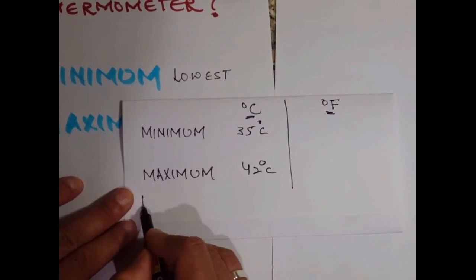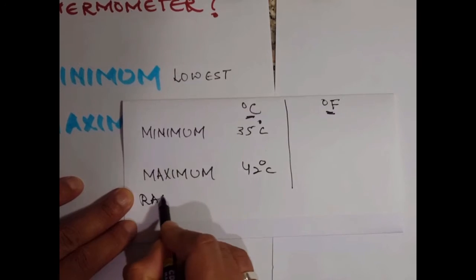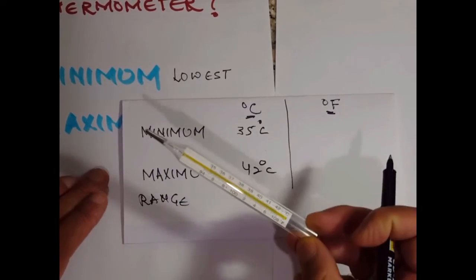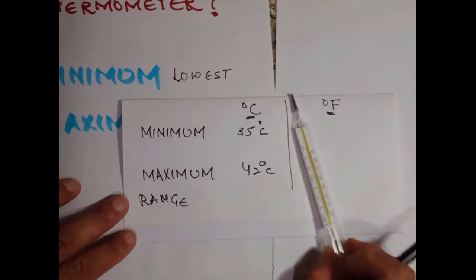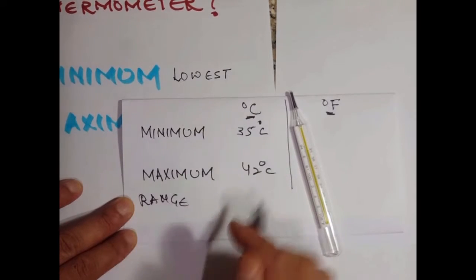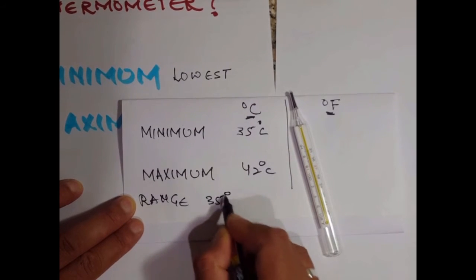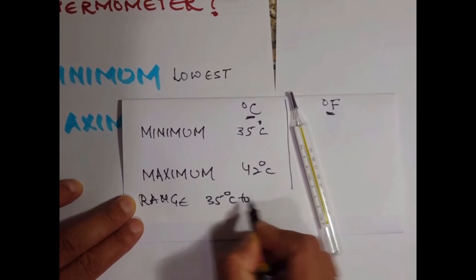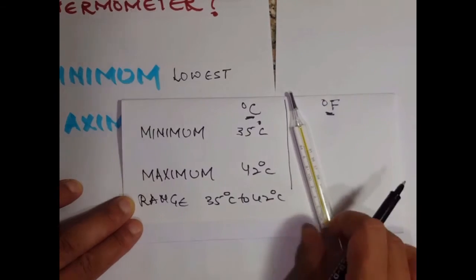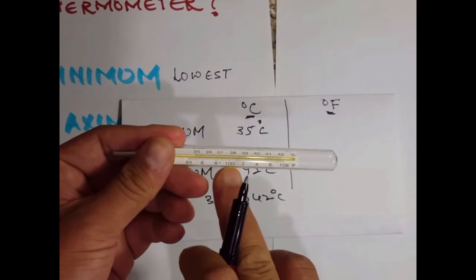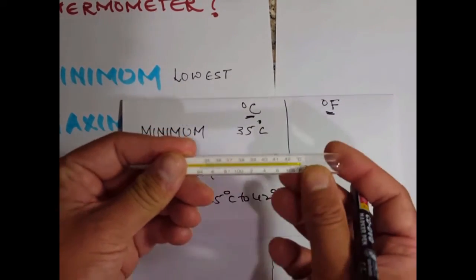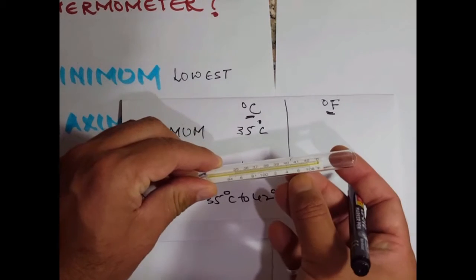So what is the range? The range of this clinical thermometer in degree Celsius is 35 degrees Celsius to 42 degrees Celsius. This thermometer also has another scale which is the Fahrenheit scale, the lower scale.